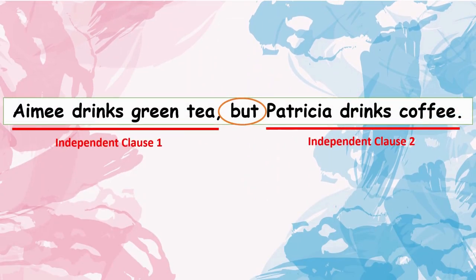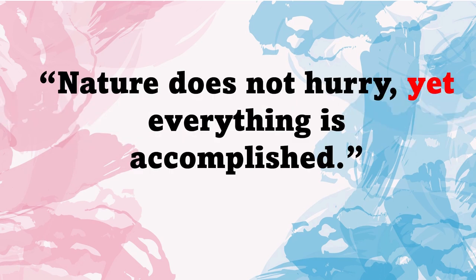Another example of a compound sentence: the independent clause 'Amy drinks green tea' is connected to another independent clause, 'Patricia drinks coffee.' The conjunction used is 'but.' Another example of a compound sentence: 'Nature does not hurry, yet everything is accomplished.'